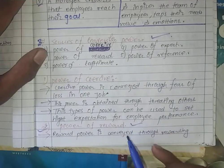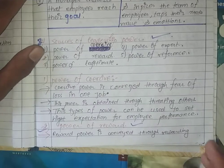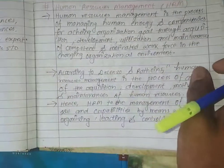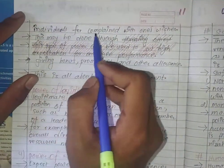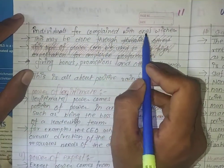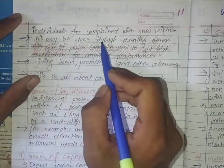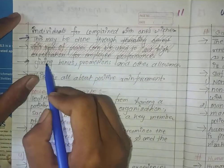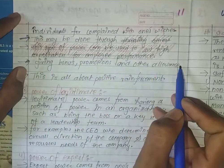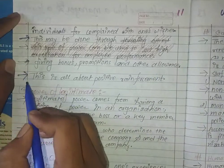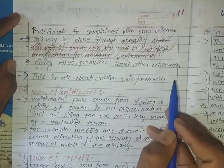Power of Reward: power of reward is conveyed through rewarding individuals for compliance with one's wishes. This may be done through giving bonuses, promotions, and other allowances. This is all about positive reinforcement.